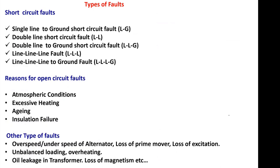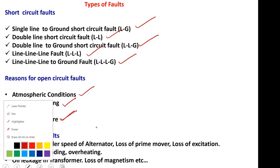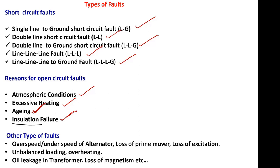Next, short circuit faults. There are five types: LG fault, LL fault, LLG fault, triple LL, and triple LLG fault. Short circuit faults occur due to atmospheric conditions, excessive heating, aging of equipment, and insulation failure. The most common reason is failure of insulation.